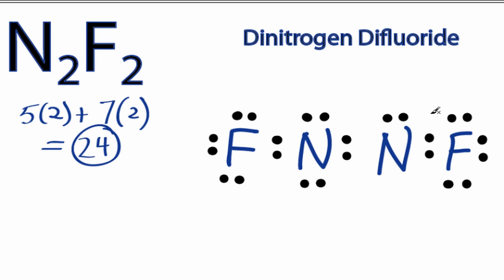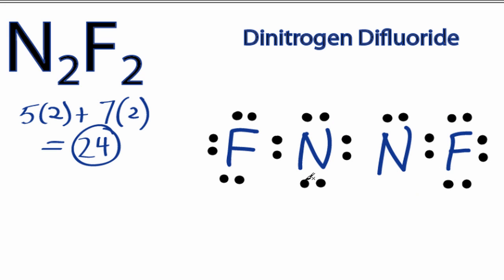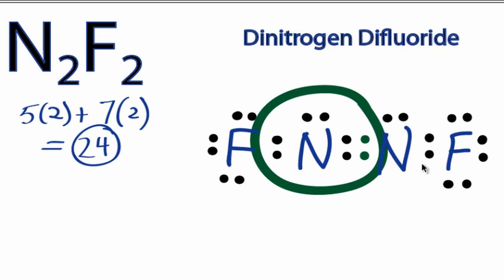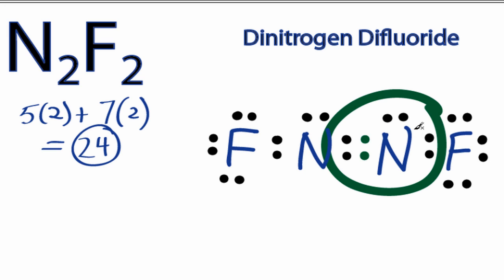We check our octets. Everything has 8 except this nitrogen right here, which only has 6, so we're going to need to shift some electrons from the other nitrogen atom into the center to form a double bond. Let's take these 2 and move them to the center. We're still only using 24 valence electrons, but now this nitrogen has 8 valence electrons, and this nitrogen has 8 valence electrons, so its octet is full as well.